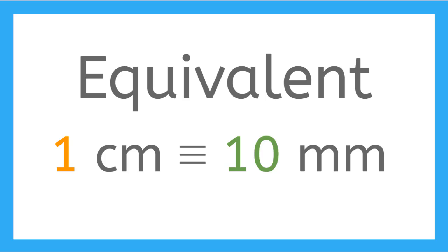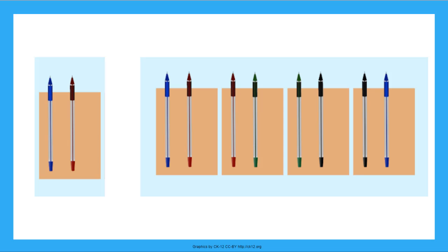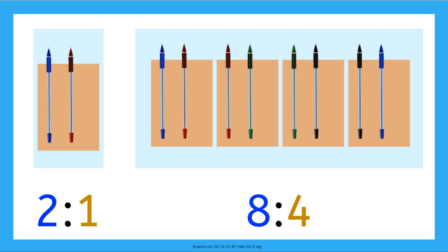We use the three horizontal lines to represent the word equivalent or translates to in math. And we can talk about ratios being equivalent also. Two pens per box is equivalent to eight pens per four boxes.